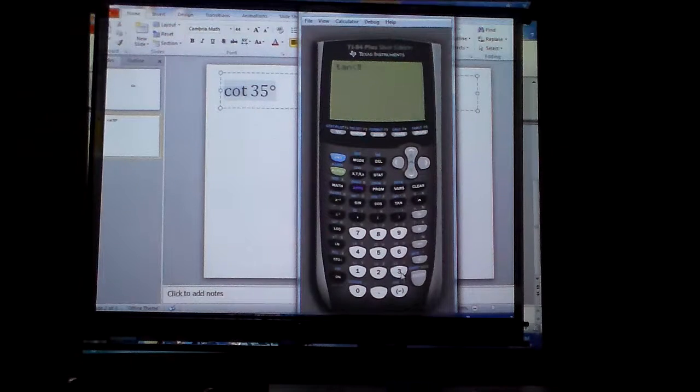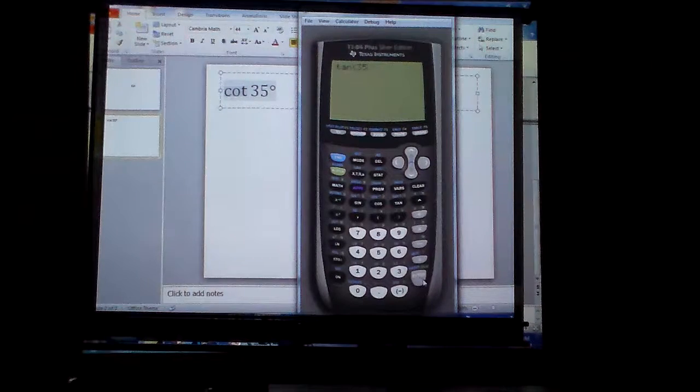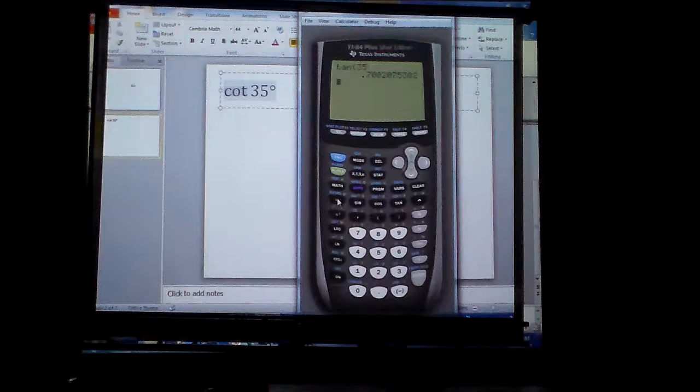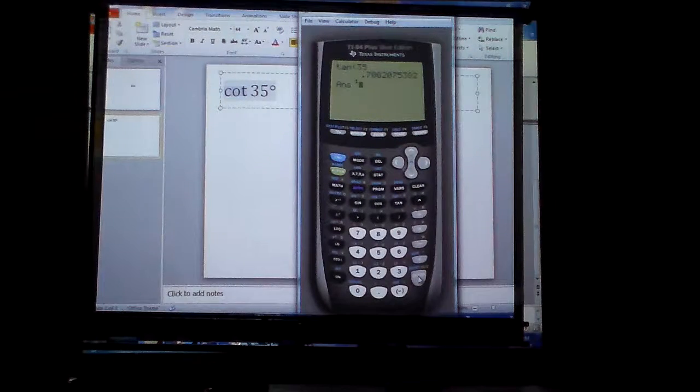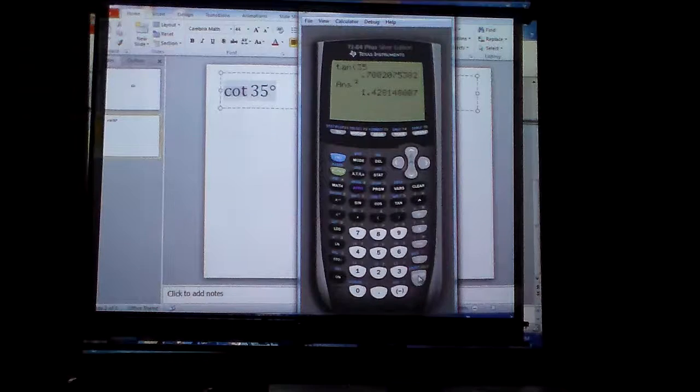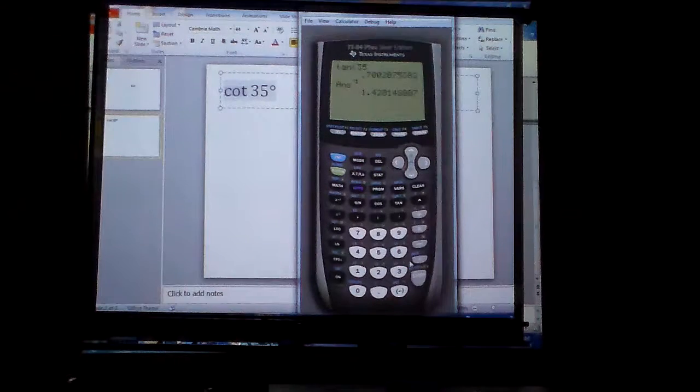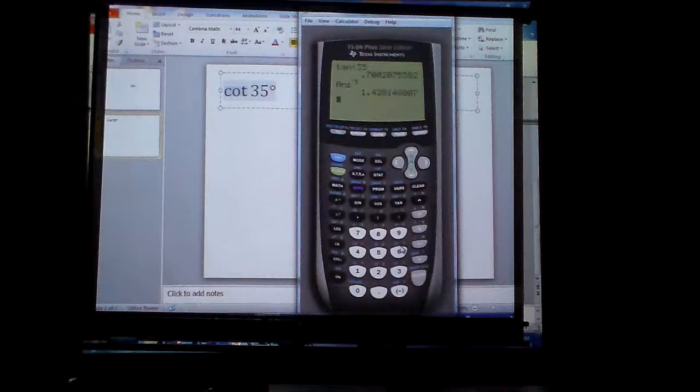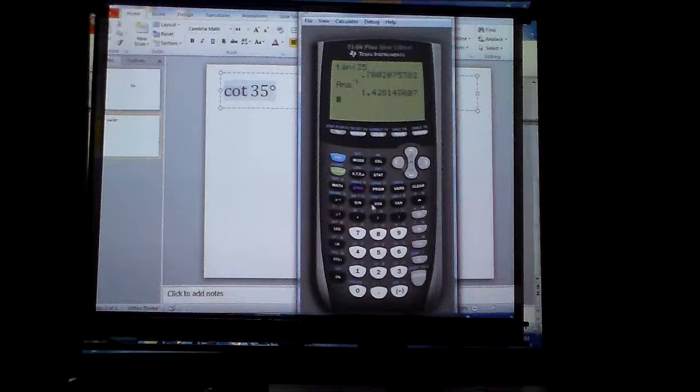So I'm going to go tangent, 35 degrees. I can hit enter, and then because it's the reciprocal, I can just hit X to the negative 1, and there we go. The cotangent of 35 degrees is 1.4281, if you round that off to four decimal places.